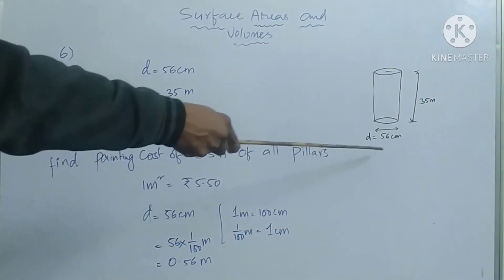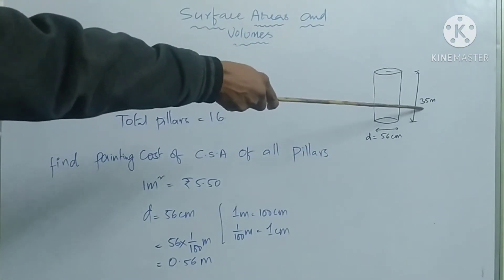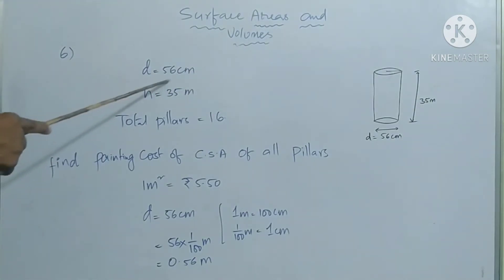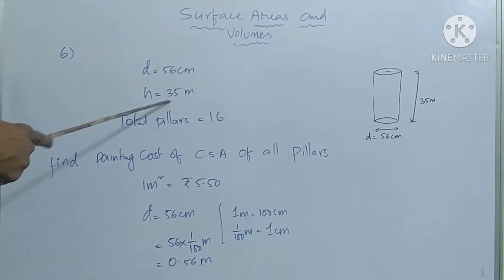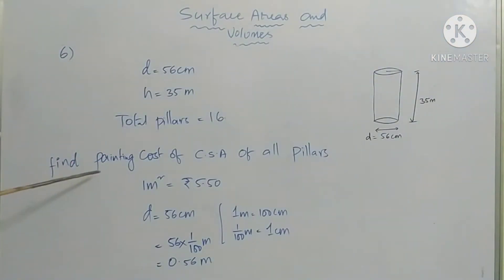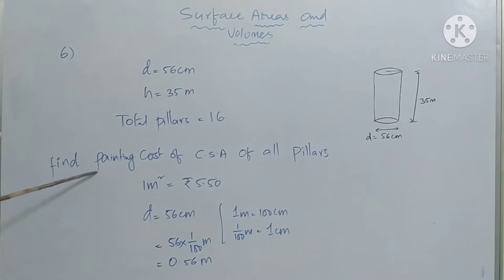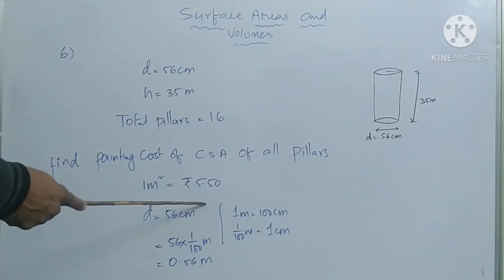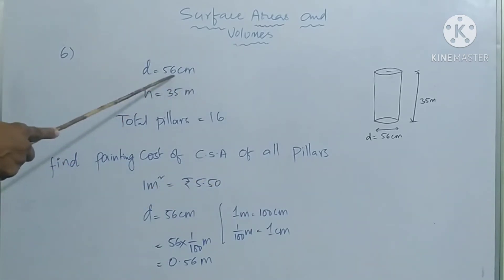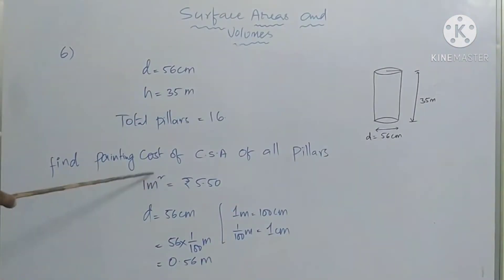So here, the cylindrical pillar has a diameter of 56 centimeters and the height of the cylindrical pillar is 35 meters. Diameter is 56 centimeters and height is 35 meters. Total number of pillars is 16. We need to find the painting cost of curved surface area of all pillars. Painting cost per one meter square is equal to five rupees fifty paise.